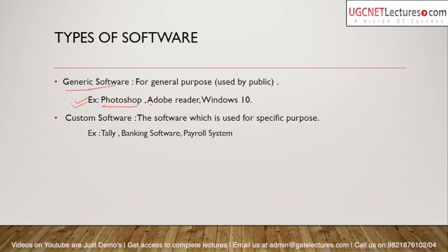Then we have custom software. Custom software is used only for some special purpose. For example, one organization may want to manage their employees, or a university may want to buy a library management system. That is special purpose software — the university gives the order to a software company to develop software used only by that university. Examples include library management systems, banking software, and payroll systems, which are not used by the general public.